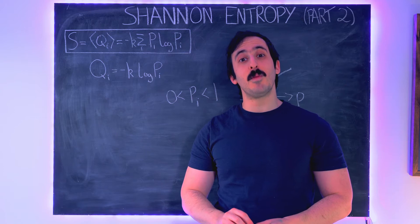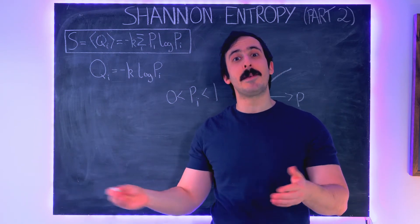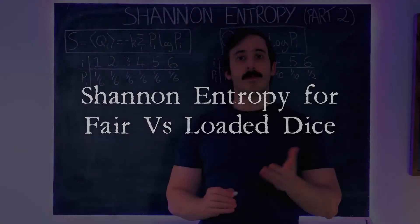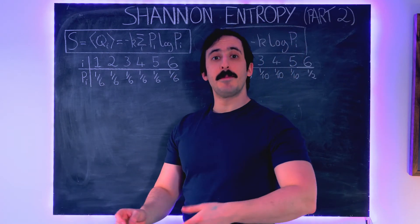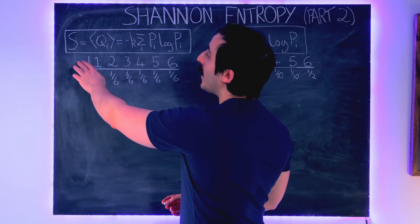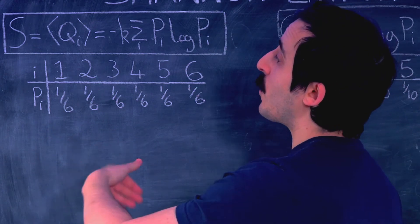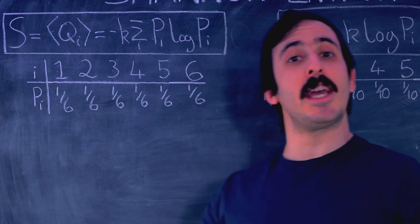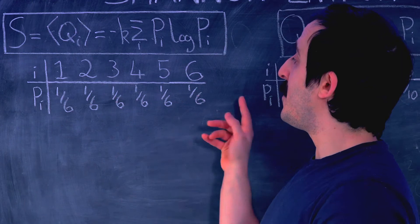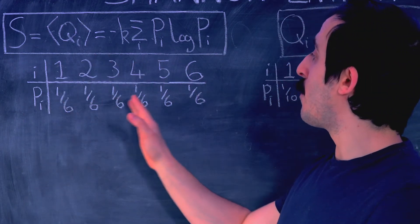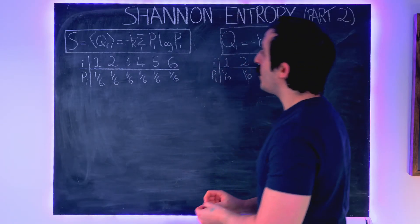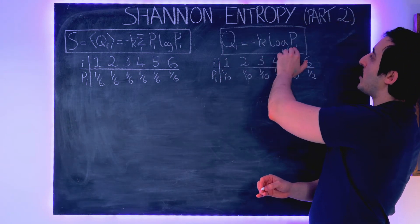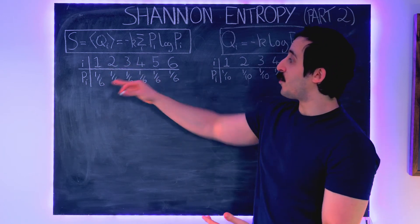So let's get into it. Our first example: we're going to look at rolling a die — first when it's a fair die with each number equally likely, and then a loaded die where one number is much more likely than the others. So a fair die means that when I roll it, I get any number with equal probability. So i here is each event — the die can come up as one, two, three, four, five, or six. Those define the six different events for this system. And pi is the probability associated with each event, which is equal to one sixth for each event. Every number is equally likely to come up.